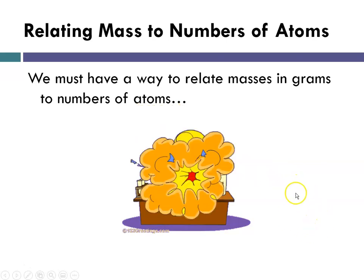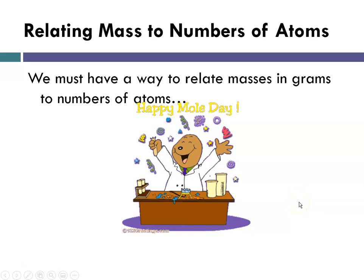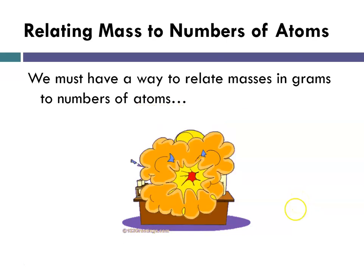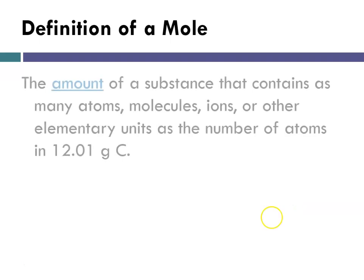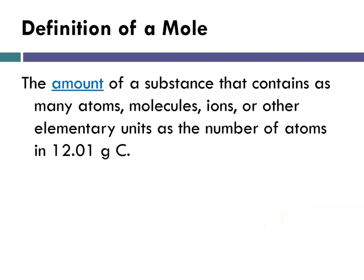And this little fellow here is the mascot for the American Chemical Society. So the definition of a mole. A mole is defined as the amount of a substance that contains as many atoms, molecules, ions, or other particles as that in 12.01 grams of carbon.